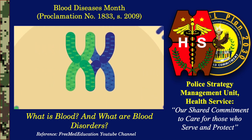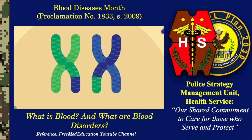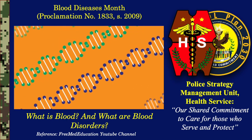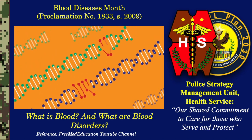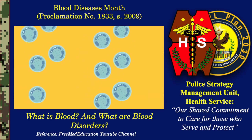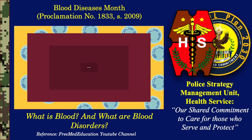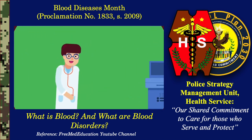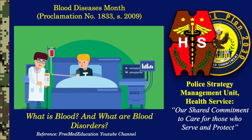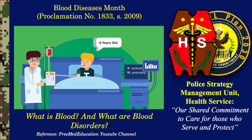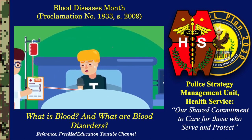In chromosome translocation, a portion of one chromosome breaks off and attaches to a different chromosome. Most cases of leukemia are not believed to be hereditary, but certain genetic mutations and conditions can be passed along to offspring that increase the chances of developing leukemia. Treatment for leukemia depends on many factors, including your age and overall health, the type of leukemia you have, and whether it has spread to other parts of your body, including the central nervous system.